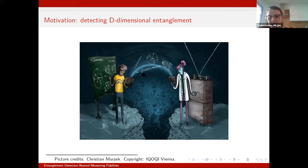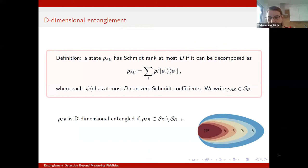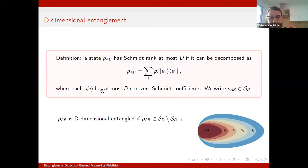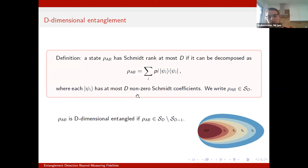I want to start with a quick introduction or recap of entanglement dimension. If we have a pure state, we can always write it in its Schmidt decomposition, and we can look at those Schmidt coefficients and find the number of non-zero Schmidt coefficients, which is the Schmidt rank. For a pure state, this is also the entanglement dimension. For a mixed state, we can write it as a convex combination of pure states, and if each has at most D non-zero Schmidt coefficients, we say the state has at most Schmidt rank D. We introduce the symbol SD for this, which is a convex set.